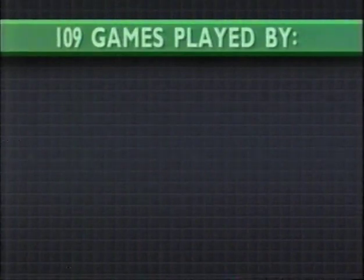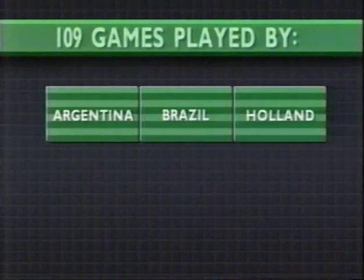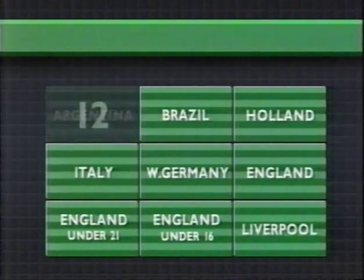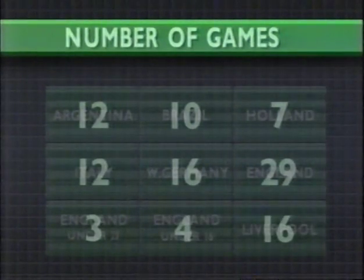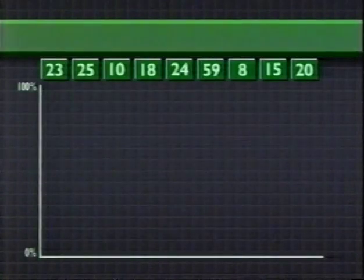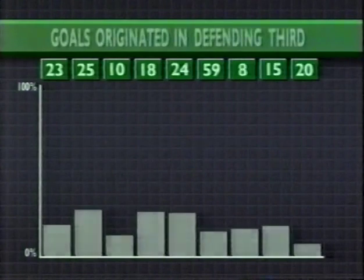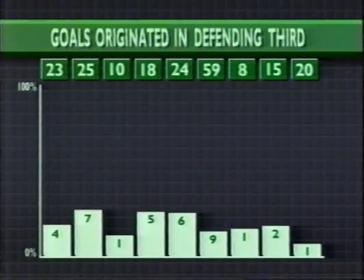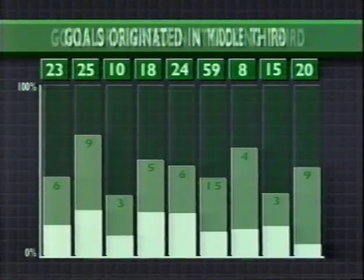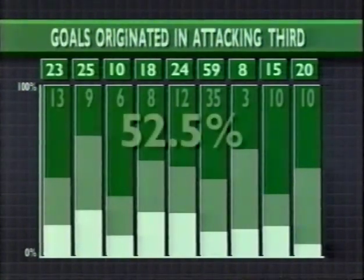Looking at a sample of 109 matches involving six countries — all of which have either won the World Cup or been runners-up over the last 20 years — the results are revealing. We analysed the play leading up to every goal and noted where each move began. The results showed that only 36 goals — 17.8% — originated in the defending third of the field. 60 goals — 29.7% — originated in the middle third. Overall, 106 out of 202 goals, 52.5%, were scored from passing movements that originated in the attacking third of the field.